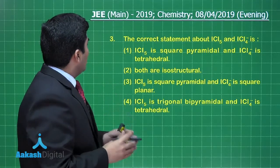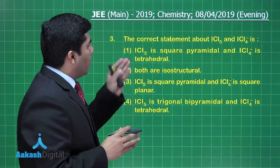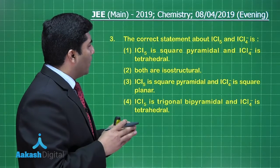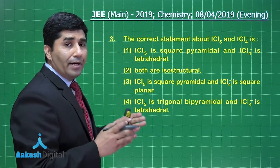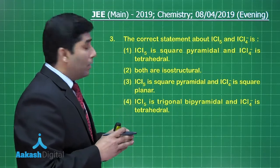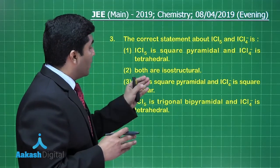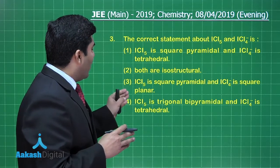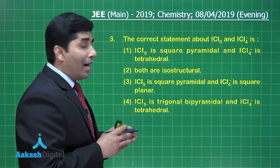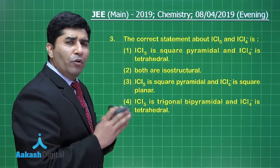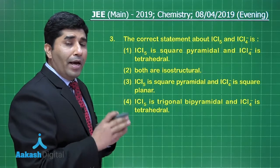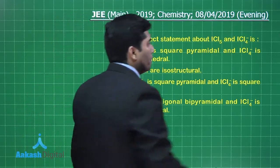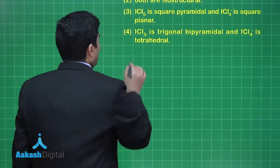In the next question, he is asking about the correct statement regarding ICl₅ and ICl₄⁻. Option one: ICl₅ is square pyramidal and ICl₄⁻ is tetrahedral. Option two: both are isostructural. Option three: ICl₅ is square pyramidal and ICl₄⁻ is square planar. Option four: ICl₅ is trigonal bipyramidal and ICl₄⁻ is tetrahedral. We can find the hybridization and from that determine the geometry and shape of these species.